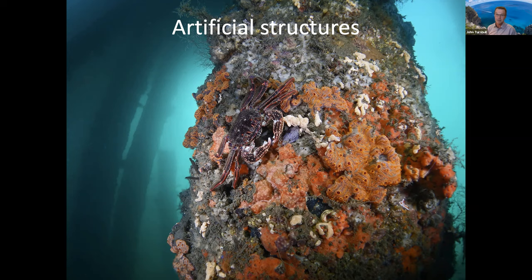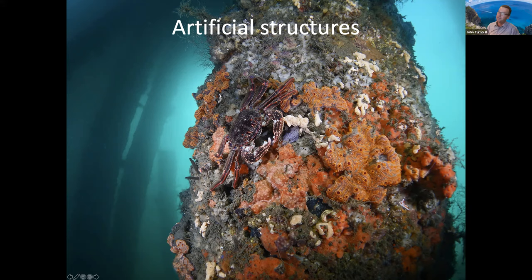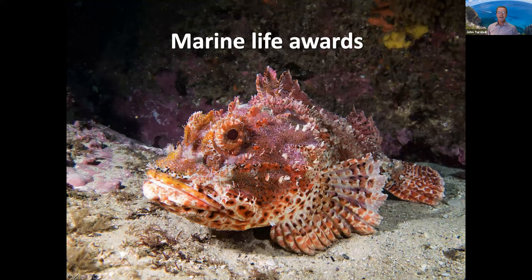Artificial structures can also be incredibly diverse, so it's a great place to go diving and look for interesting marine life — but it is a challenge. In fact, you can see a couple of invasive species already in that shot. Those pale coloured clumps are an invasive ascidian. The crab, however, is native.